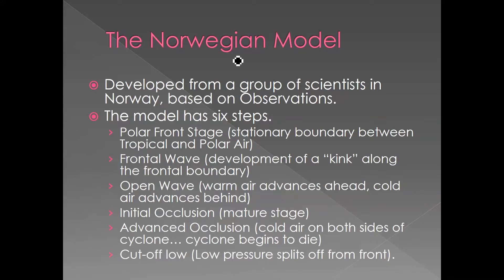This kink creates two different fronts. On one side of the cyclone, we have a warm front where warm air is pushing north. On the other side, we have a cold front where cold air is pushing south. Eventually, this warm air advances ahead and cold air advances behind, creating what's called an open wave. As the storm begins to intensify, the warm front gets caught up by the cold front, causing occlusion. Then the two fronts zip together, and the cyclone begins to die. Eventually, the low pressure cuts off from the frontal boundary and fades away.